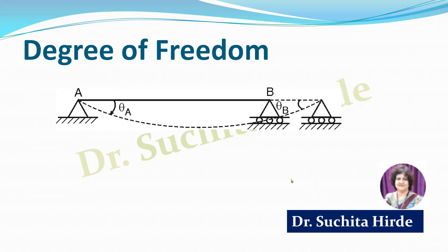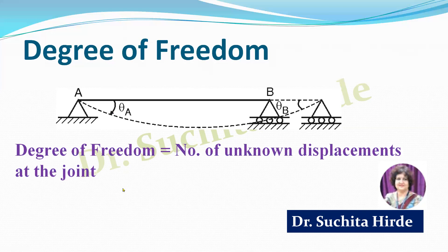Let us consider this beam. Under the action of the load, there will be some displacement of every joint. There are two joints A and B. At A there is hinge support, at B there is roller support. Whenever we apply certain loads on this beam, there is displacement of the joint. These displacements are translation — movement in vertical or horizontal direction — or rotation of the joint. Degree of freedom is equal to the number of unknown displacements at the joint.